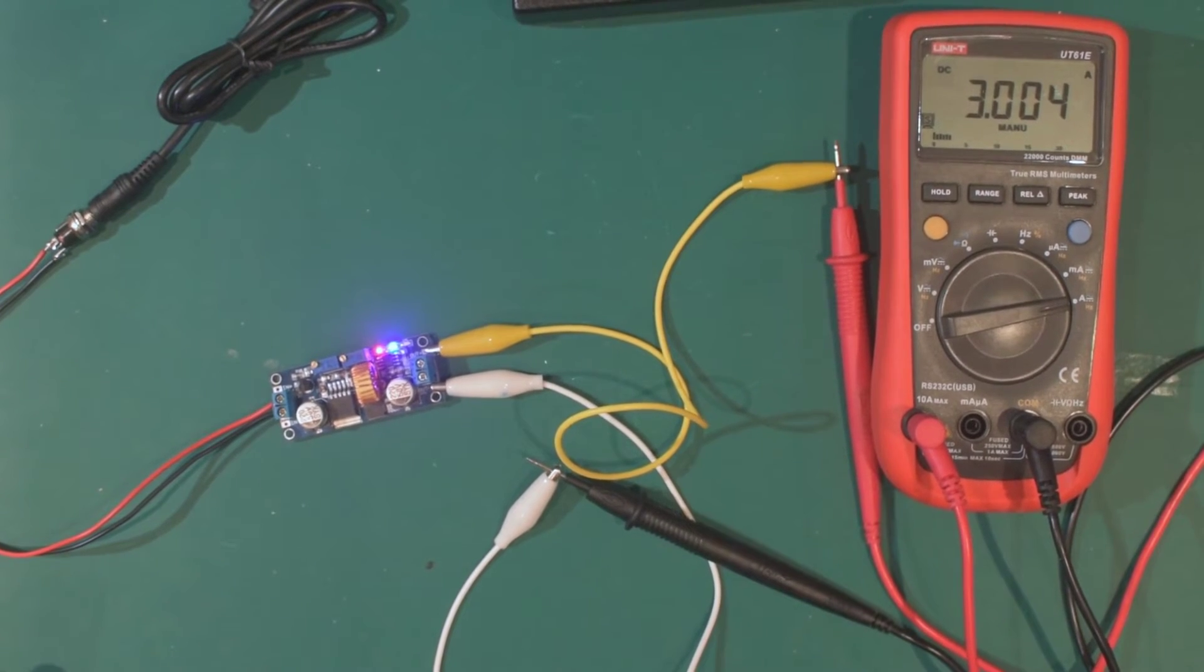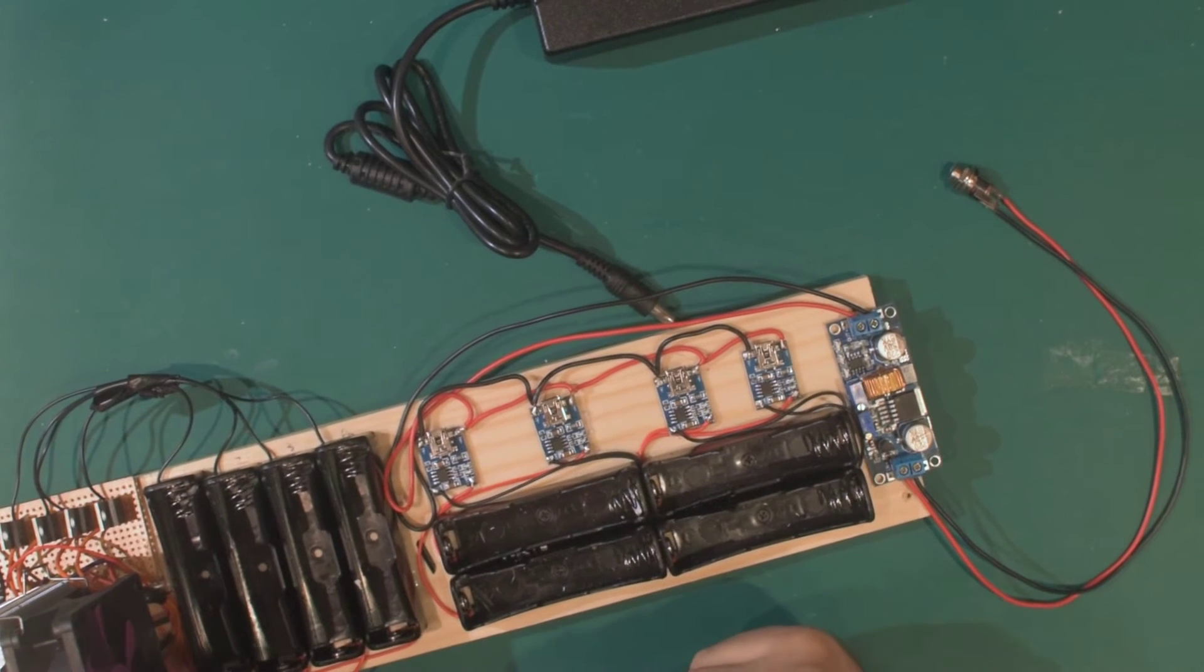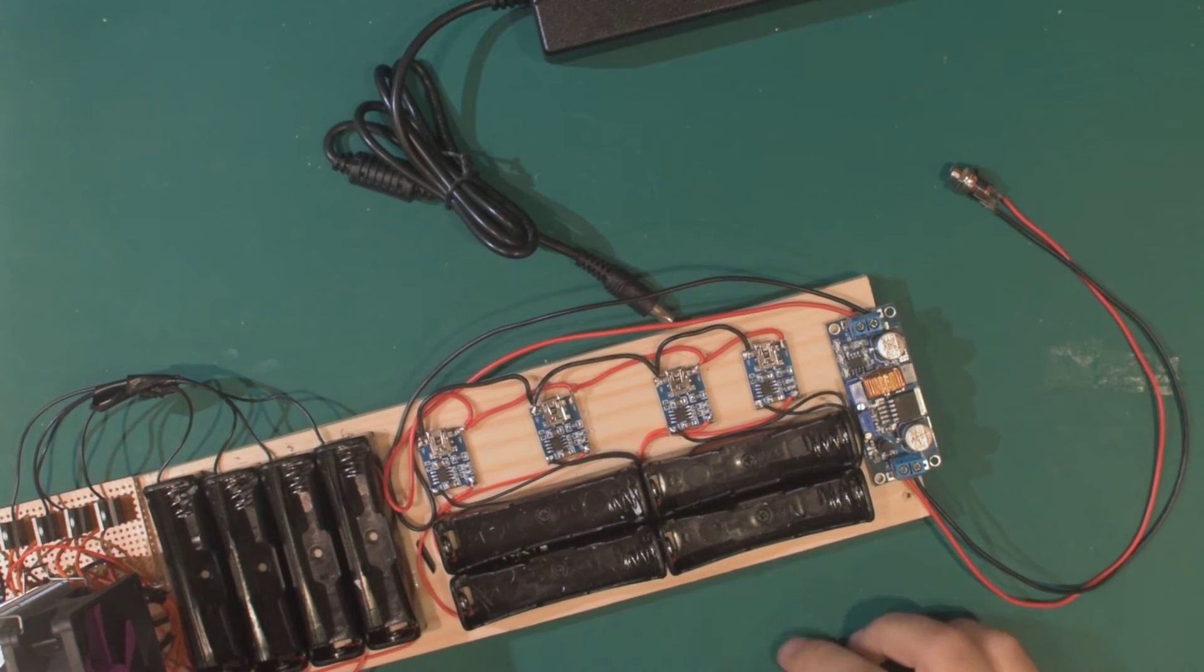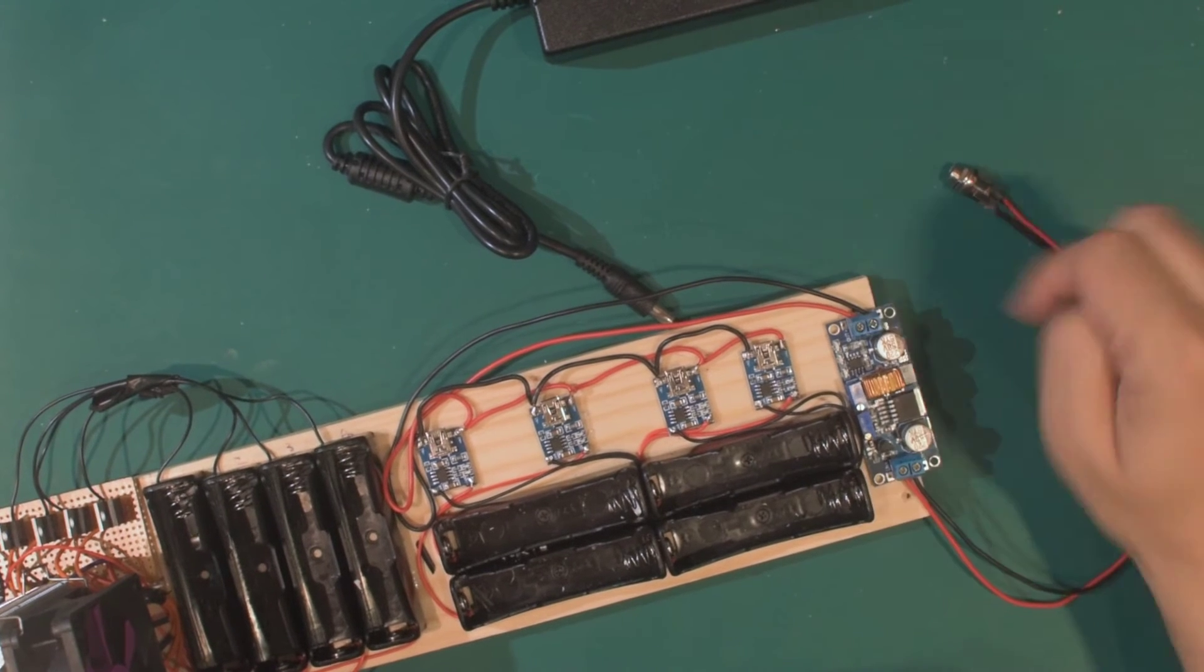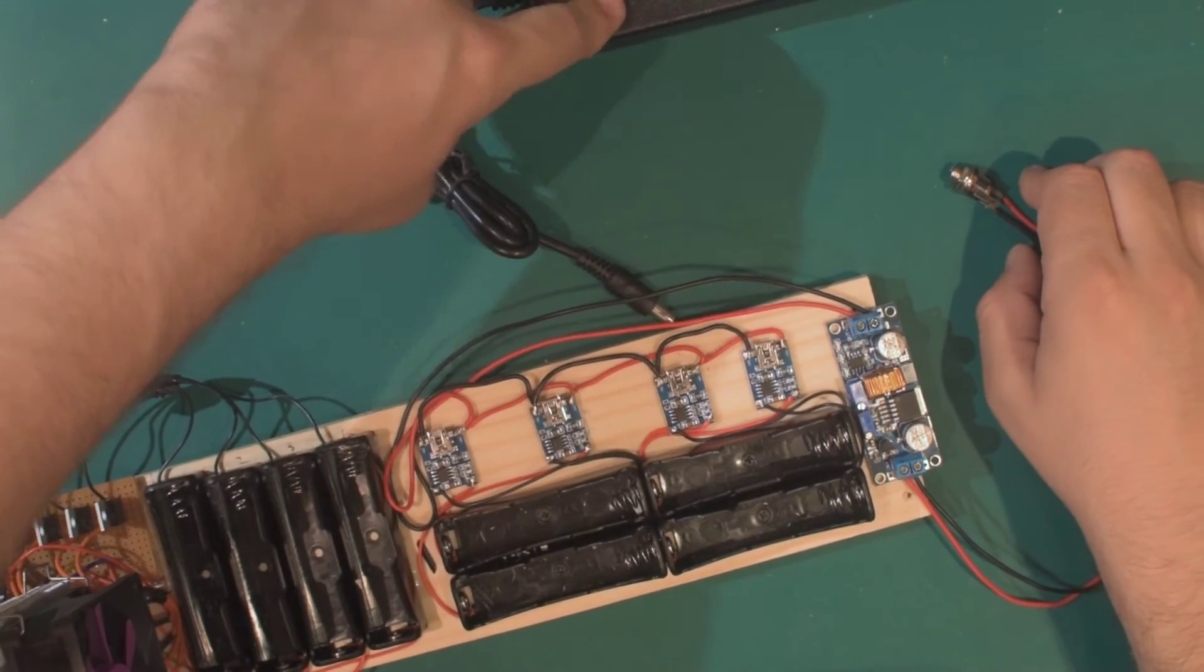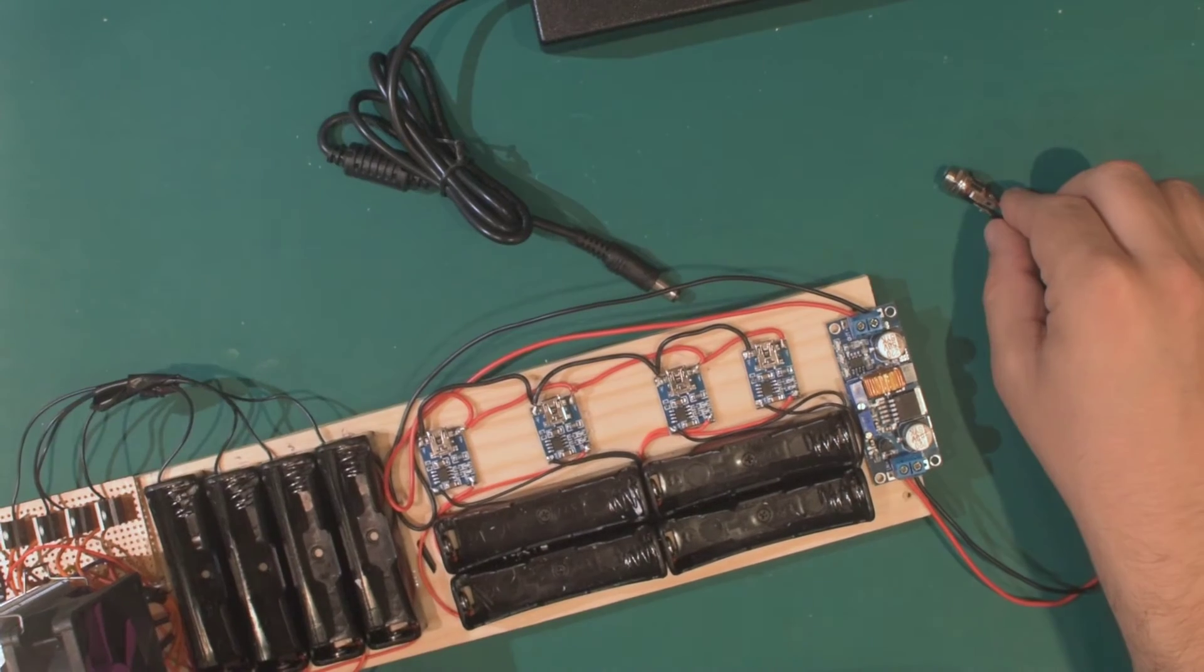Okay, so down here we've got these TP4056 boards that are everywhere on eBay, and these will charge lithium-ion packs, single cells. These are all wired in parallel into this buck converter which is dropping the 12 volts from our mains pack.